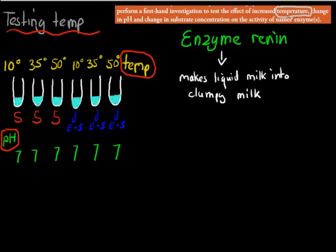I'll go over temperature first. Some of you would have done something similar in class — you would have had six different test tubes. In three test tubes you would have had only the substrate (S for substrate), and the other three would have had enzyme plus substrate. The reason we have substrate-only tubes is to see what happens with no enzyme present. We predict nothing would happen, because we need an enzyme to make chemical reactions occur at a meaningful rate.